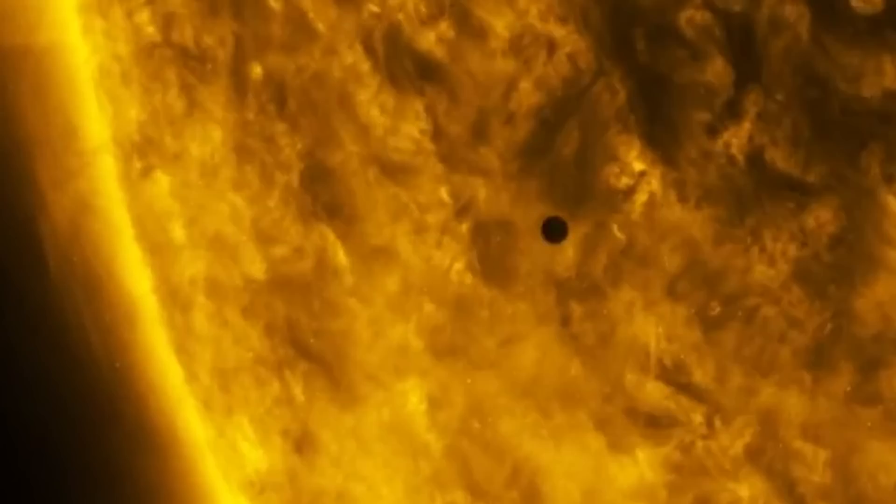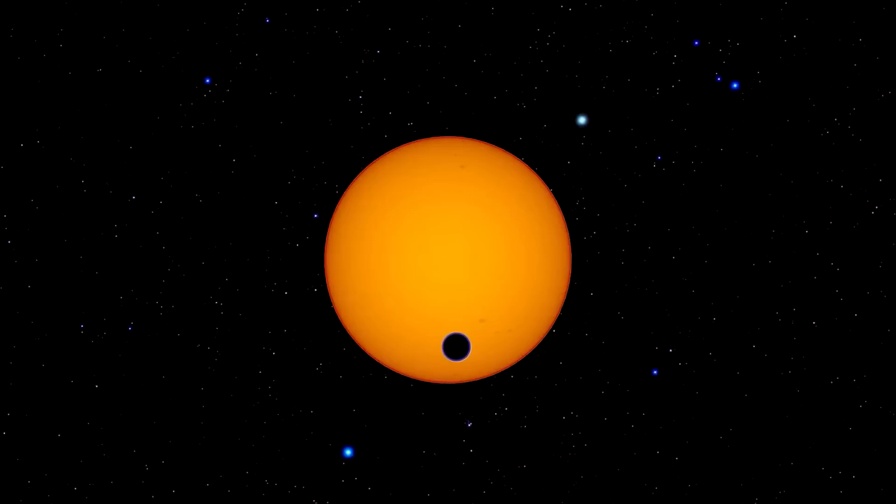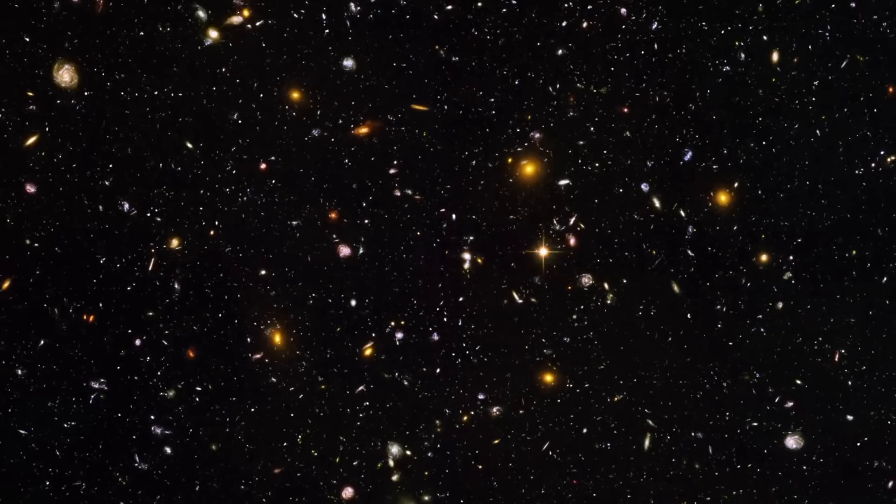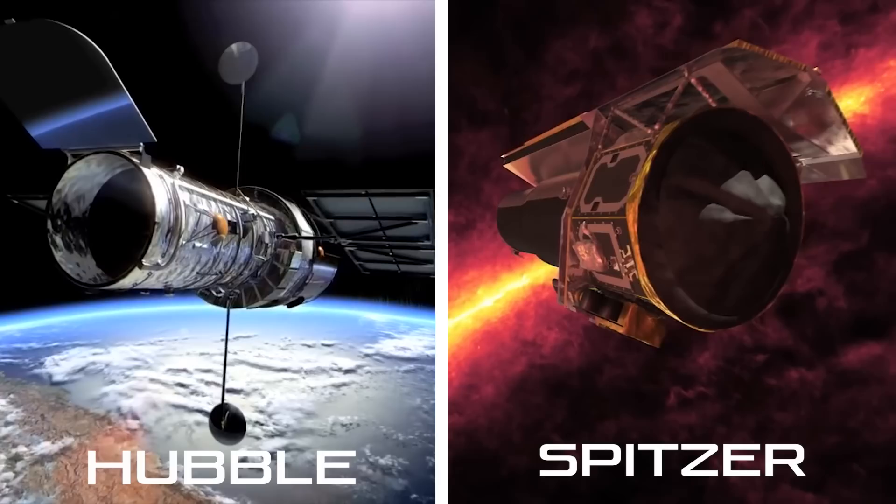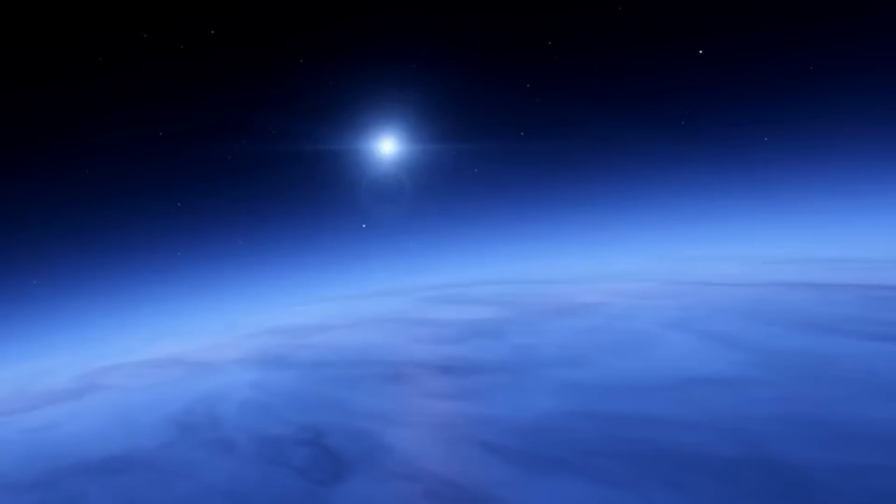This exoplanet was discovered due to ground-based detections of the subtle, intermittent dimming of light from its host star as it passes in front of the star. Earlier observations from NASA's Hubble and Spitzer Space Telescopes discovered the presence of sodium, potassium, and water vapor in the exoplanet's atmosphere. This exoplanet is well known for containing a significant amount of water in its atmosphere, as stated in a 2018 study.